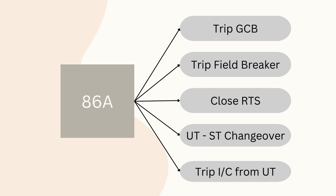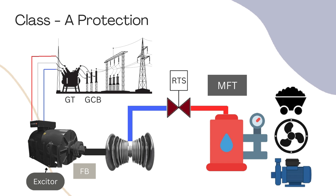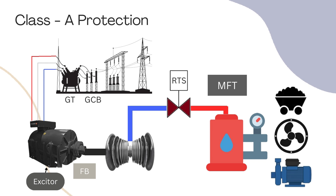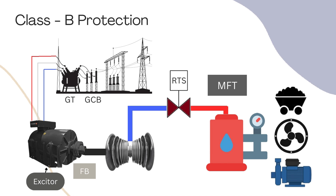In Class A protection, the trip command goes to the GCB, UT incomer, and RTS simultaneously. But there is a problem: when the turbine is tripped, there may be trapped steam, and due to the kinetic energy of the rotor it will take time to stop rotating and provide mechanical power to the generator — the rotor may over-speed. Another problem is that when Class A protection operates, power flow to the grid stops suddenly, creating a grid disturbance. This problem does not happen with Class B protection, where generation decreases gradually before the generator is isolated, allowing trapped steam time to finish.